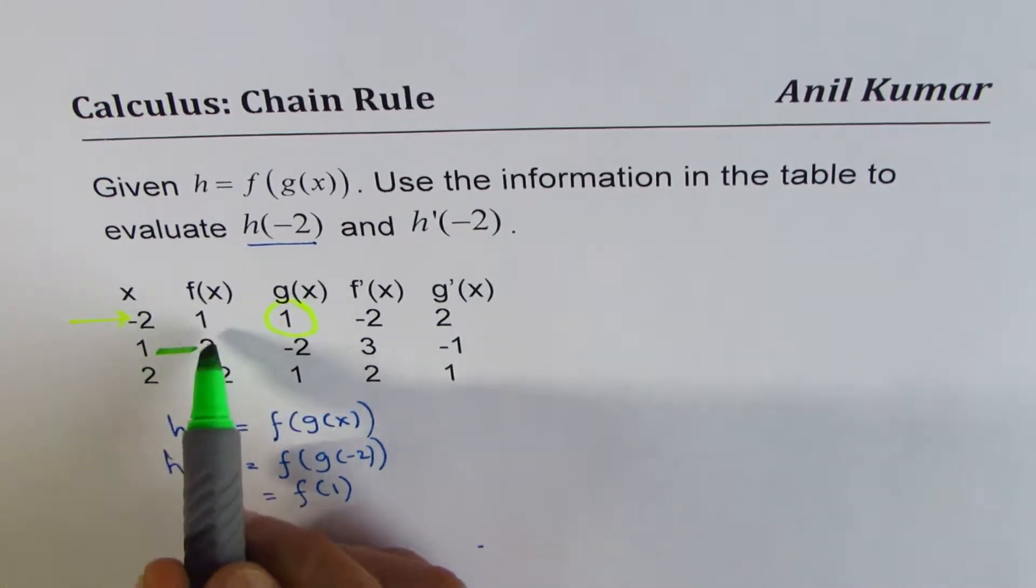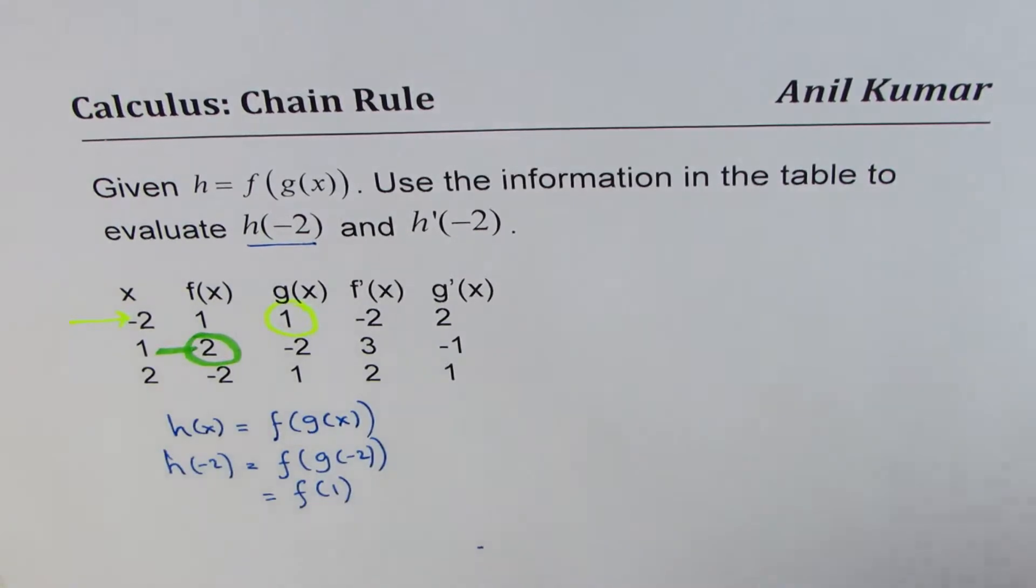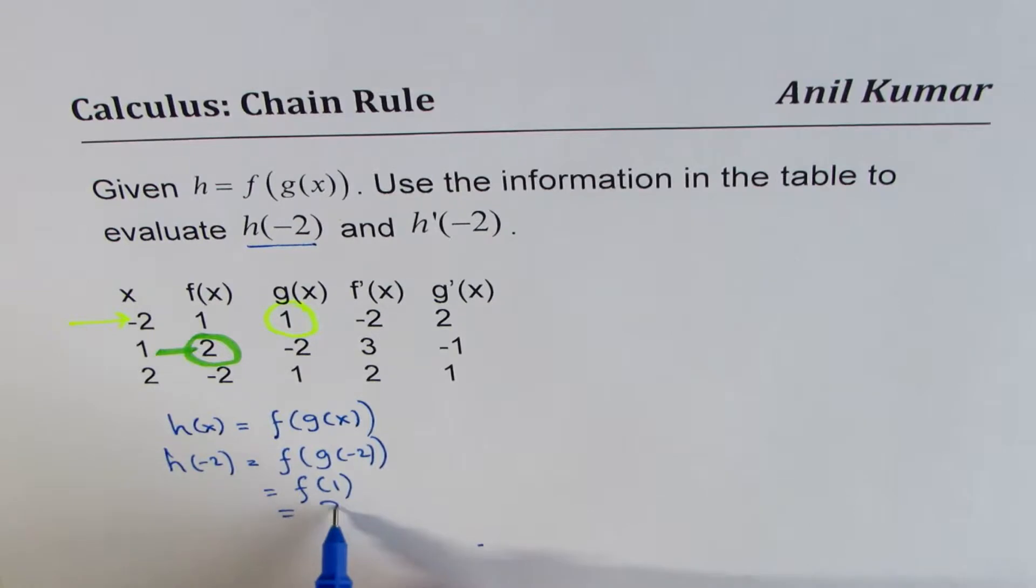For 1, f is 2. So we get h of minus 2 as equal to 2. That is the answer for the first one.